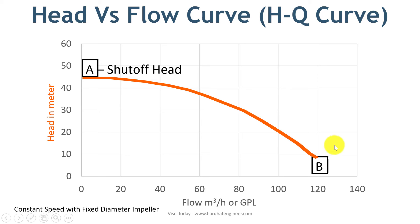Point B on the X-axis is the highest flow from the pump when there is no head. For a practical example, consider that you are watering the garden. Point A is when you keep the pipe vertical and the water goes to a certain height before it falls. Point B is when maximum water is coming out of the hose with no pressure head. From point A to B, head is reduced with the increase in flow rate. This is all about the head versus flow curve.